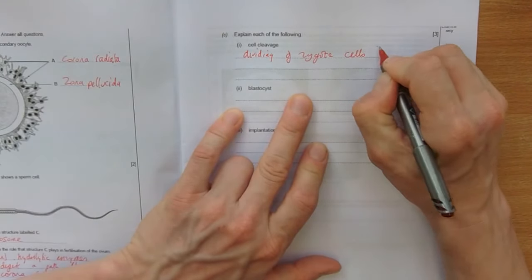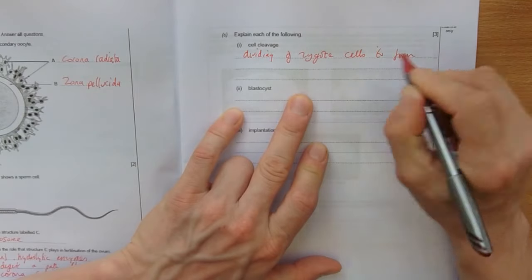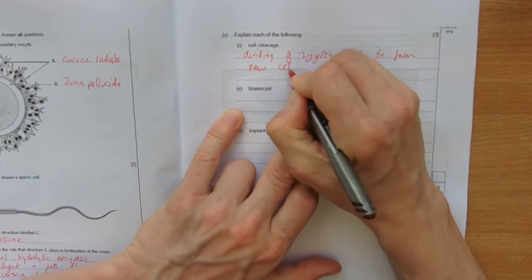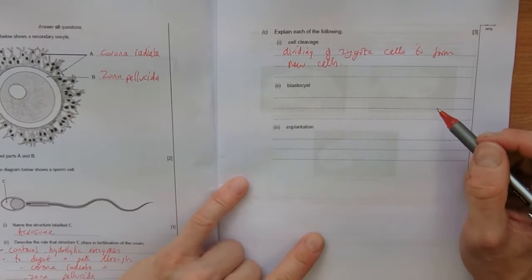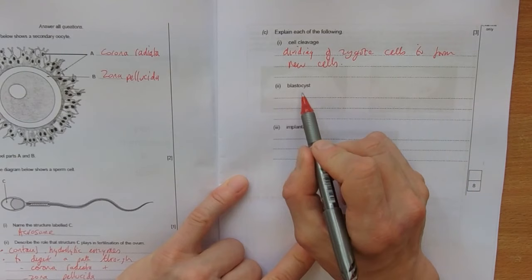Cells to form new cells. So one to two to four to eight to sixteen and so on. Blastocyst.